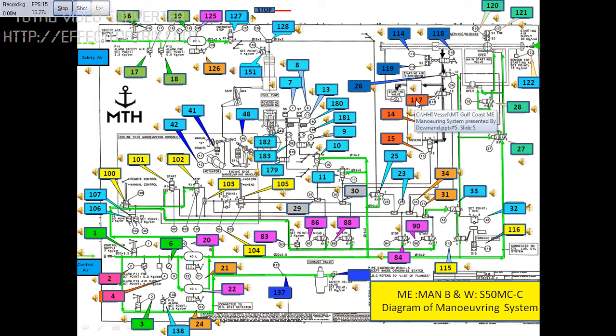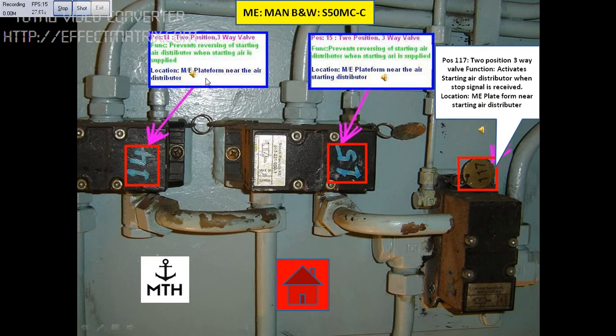Once you click on the block, you can see the detailed drawing of the actual picture of the ship. This block is position number 14, which is a 2-position 3-way valve. The function of this valve is to prevent reversing of the starting air distributor when starting air is supplied. Location: main engine platform, near the air distributor.